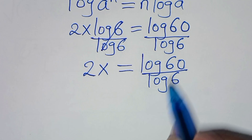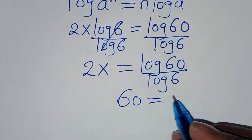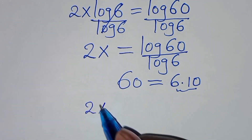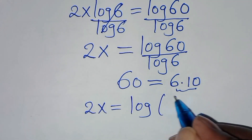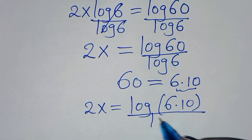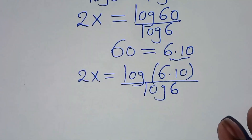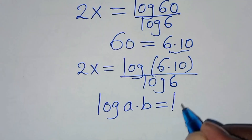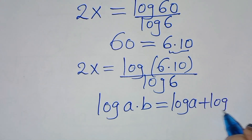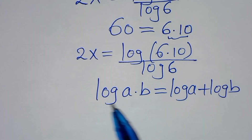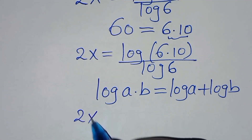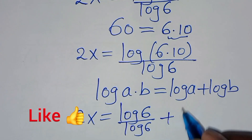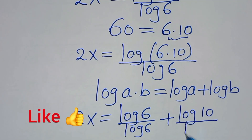The next step is we can express 60 as 6 times 10. Substituting this, we have 2x is equal to log of 6 times 10, divided by log 6. Now log of 6 times 10 is in the form of log a times b, which we can express as log a plus log b.